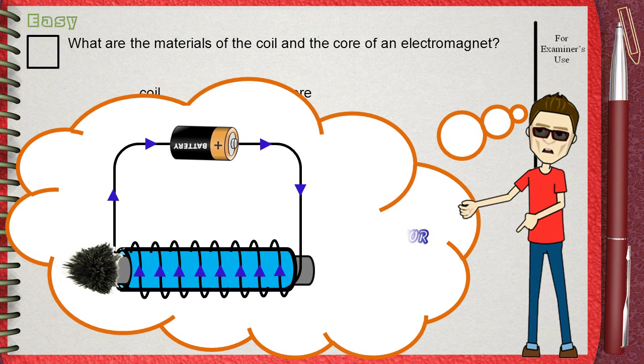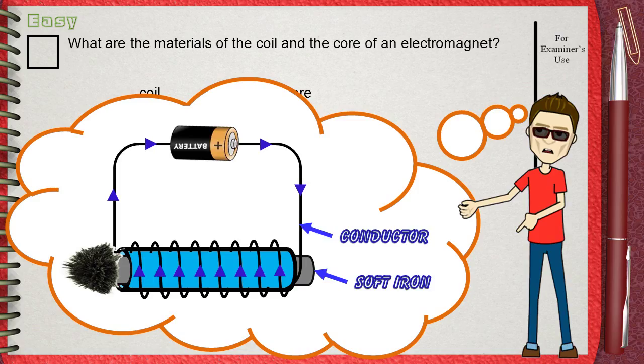The coil where the current flows and this must be made of a good conductor of electricity, and the core which will act as the electromagnet and this must be made of a ferrous substance.